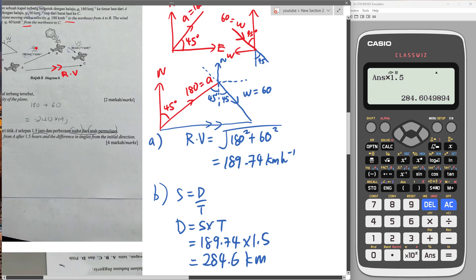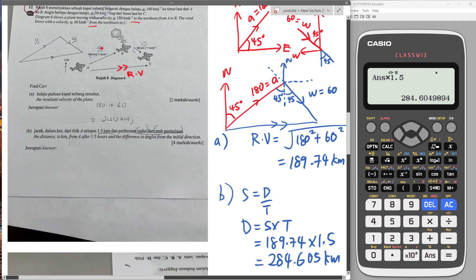Then I will get something like this: 284.6 kilometers. Or you can say 284.605 kilometers if you want more decimals. This is how far the plane will travel.